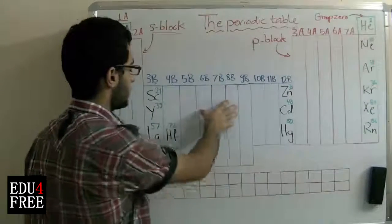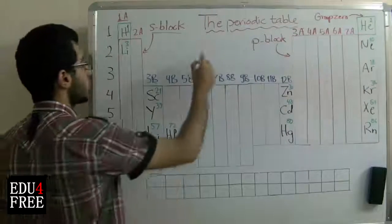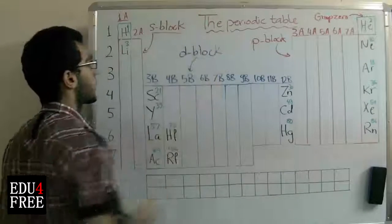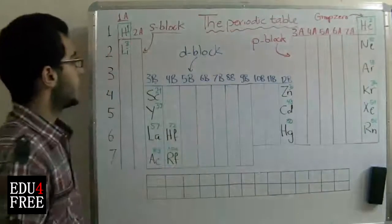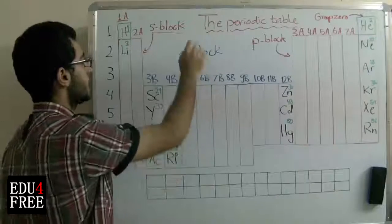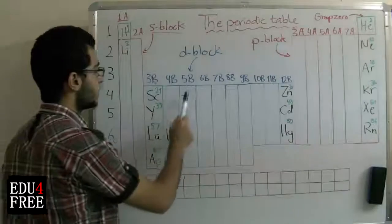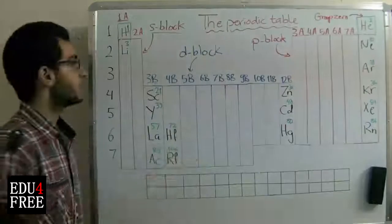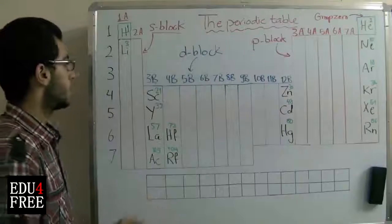Now we go to the block in the middle, which is called the D block. It's called the D block because the elements found here have their outermost energy sublevel in the D sublevel. Beginning from here we have D1, D2, D3, D4, D5, D6, D7, D8, D9, D10. The maximum number of electrons carried in the D block is 10 electrons.